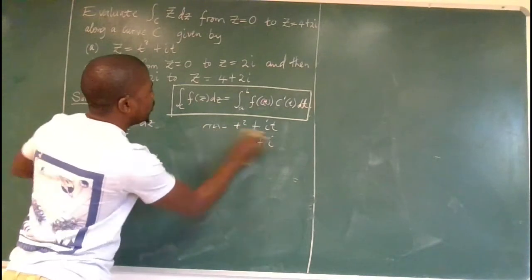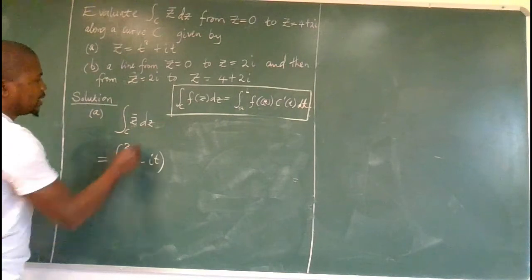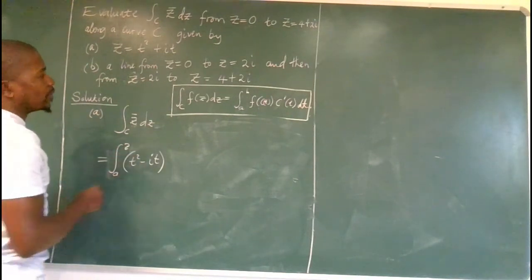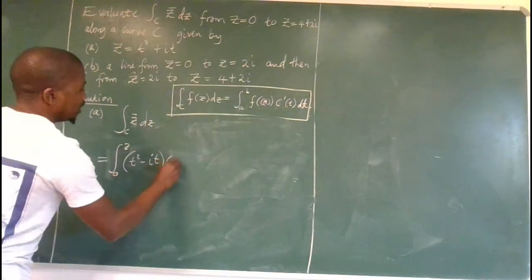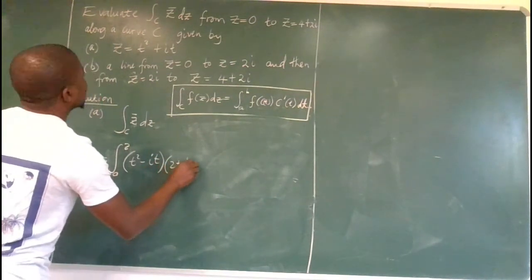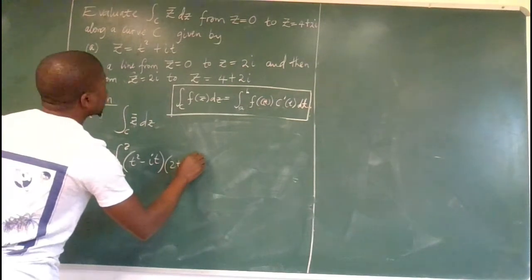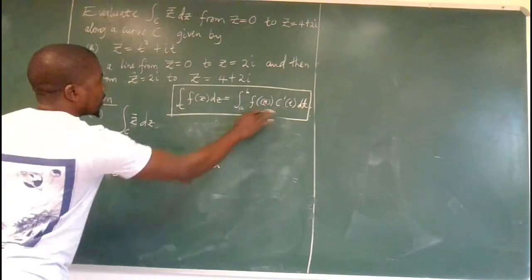So we don't need this anymore. t squared minus i t and then we also need the derivative of that which is 2t plus i. And then dt according to this formula.